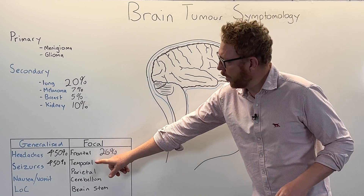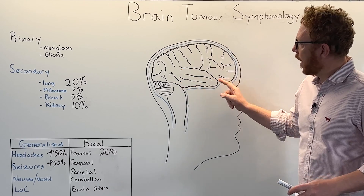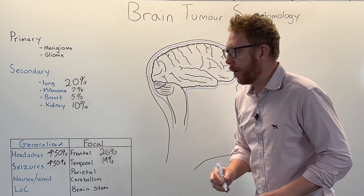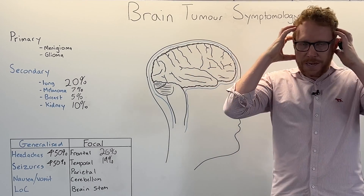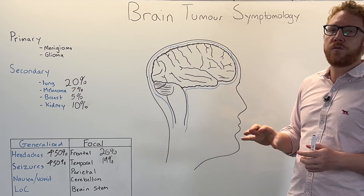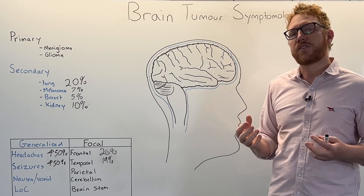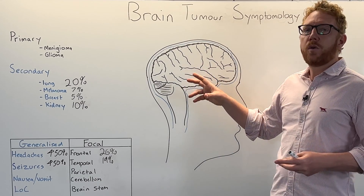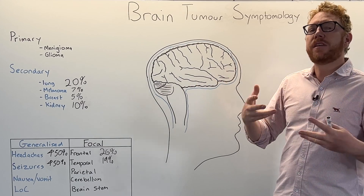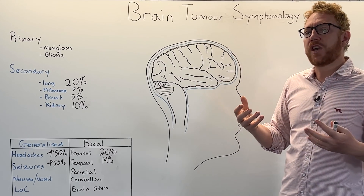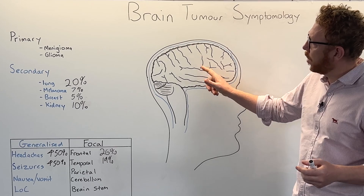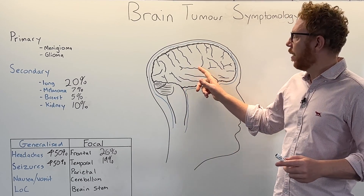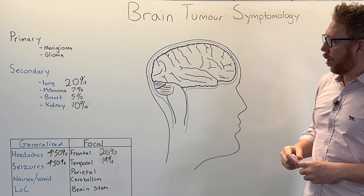The next region is the temporal lobe. About 19% of brain tumours impact this part of the brain. Located near the ears, it plays a very important role in processing auditory functions, so changes in hearing are common with tumours of the temporal lobe. It is also involved in receptive language - the understanding of speech rather than its production - so receptive aphasia is more common with temporal lobe involvement.